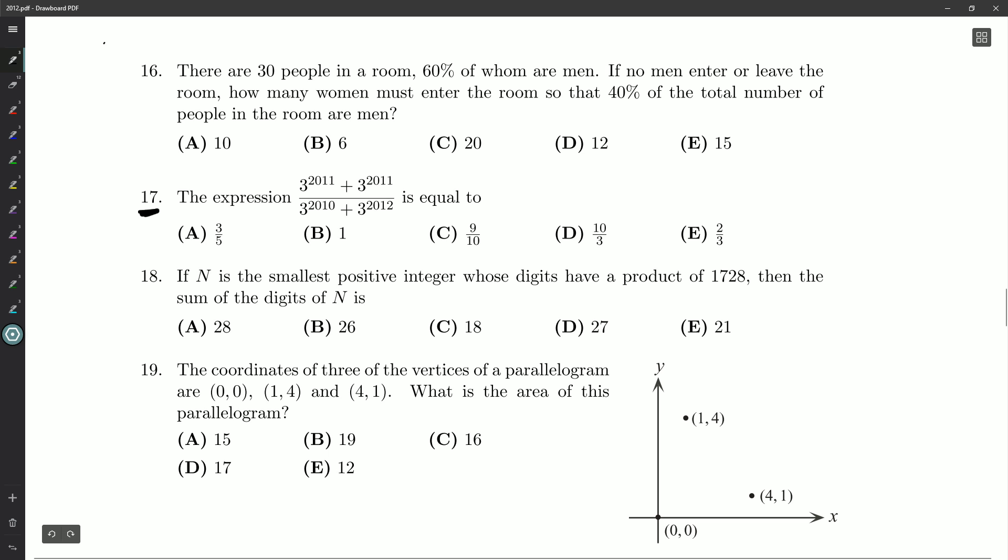The expression 3 to the 2011 plus 3 to the 2011 divided by 3 to the 2010 plus 3 to the 2012 is equal to, and then we have some very simple fractions here. So we really should be able to get rid of a lot of these 3 to the powers.